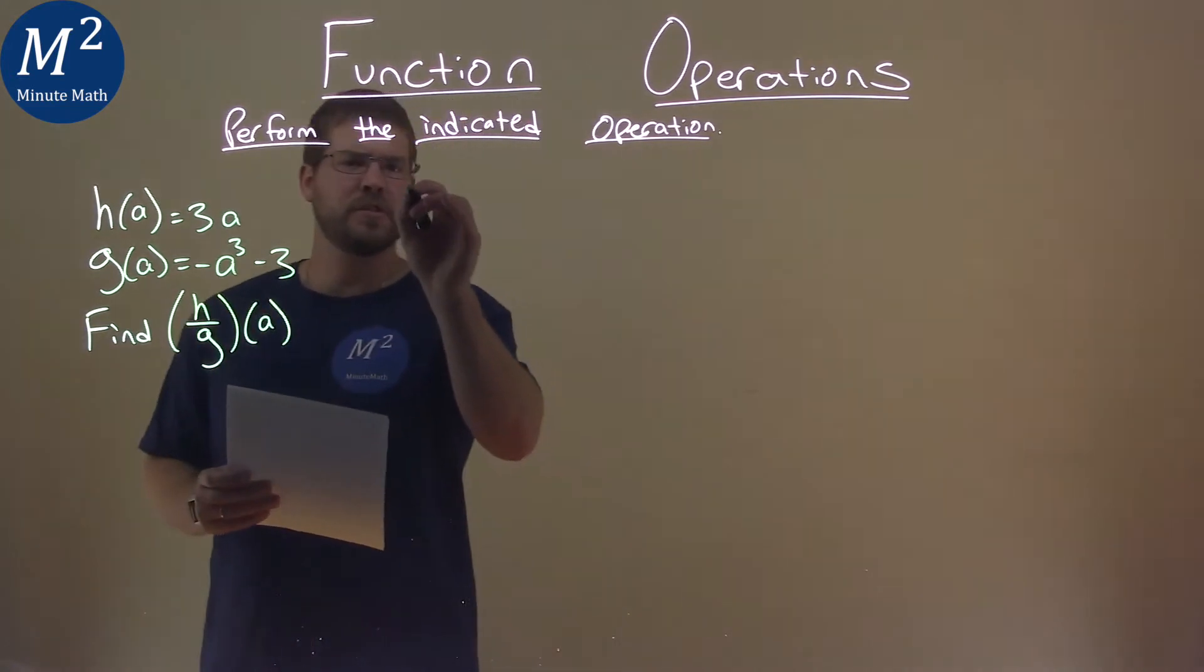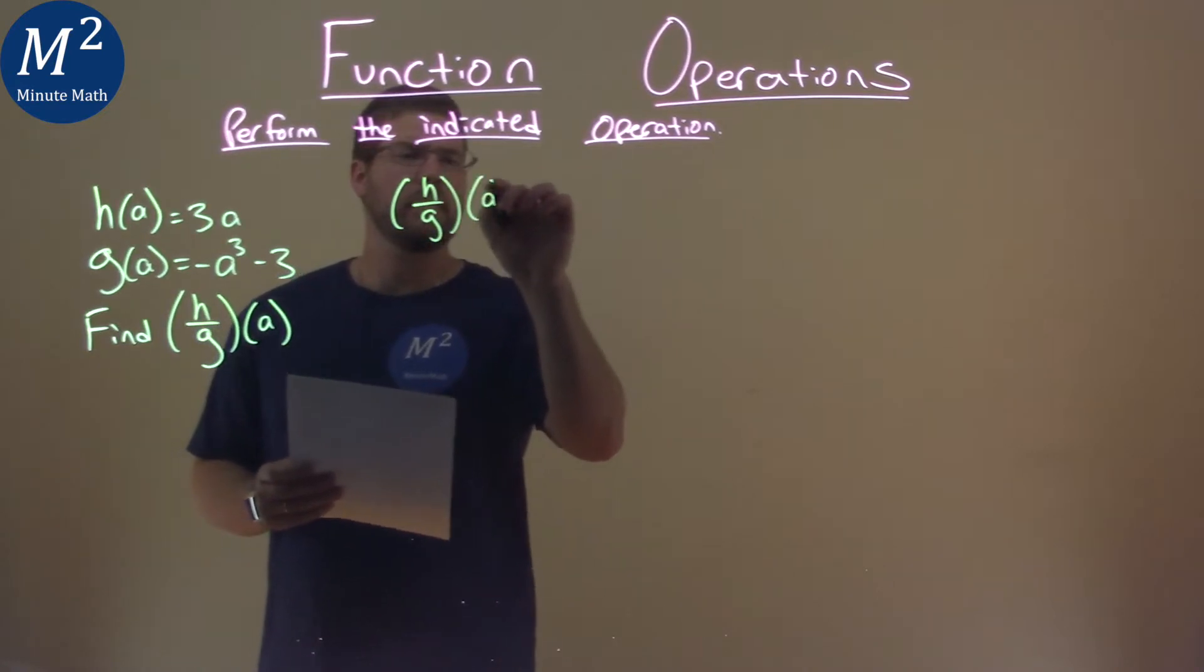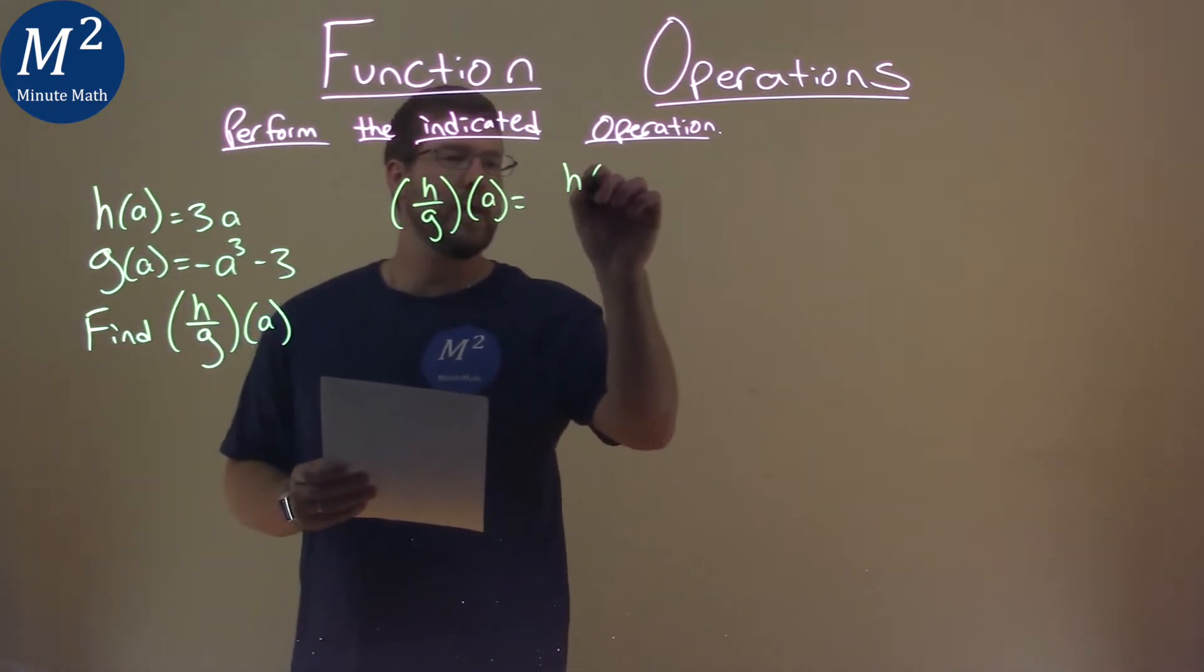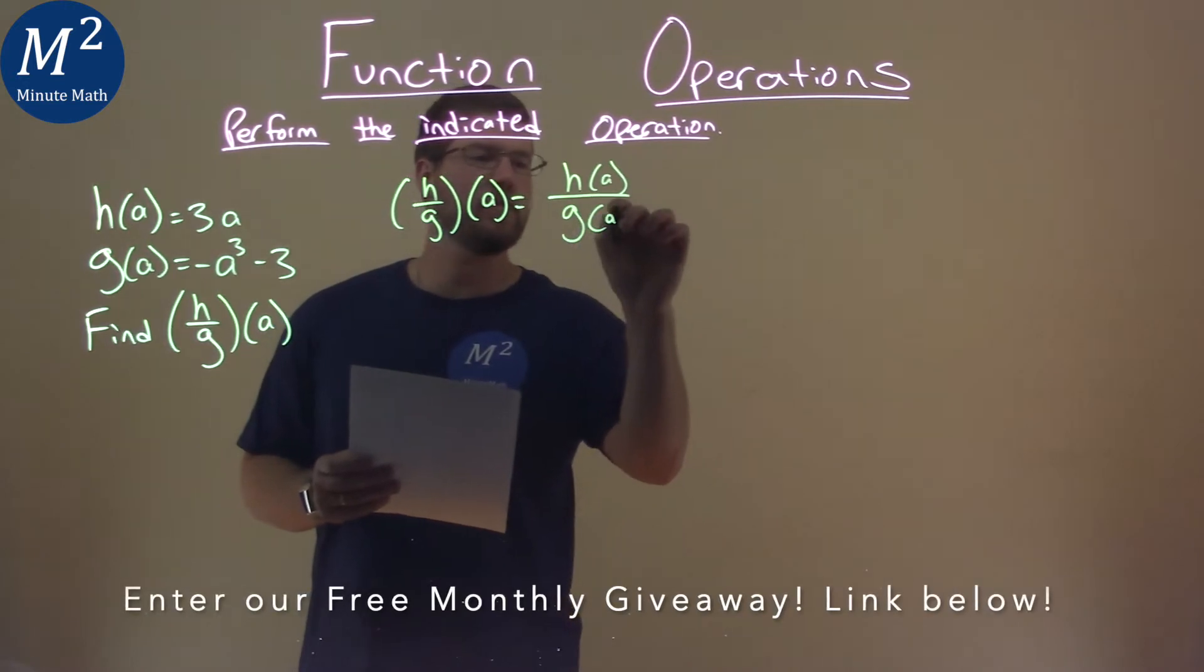What is h over g of a? Well, that is equal to h of a over g of a, these two functions.